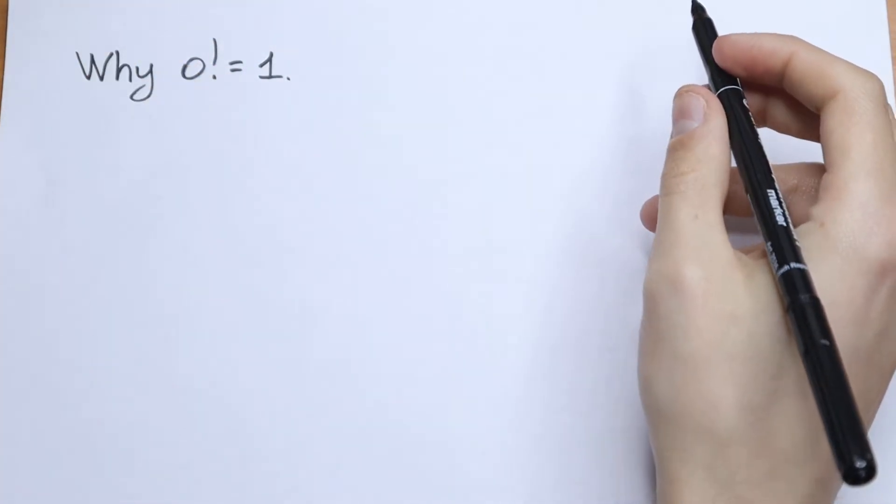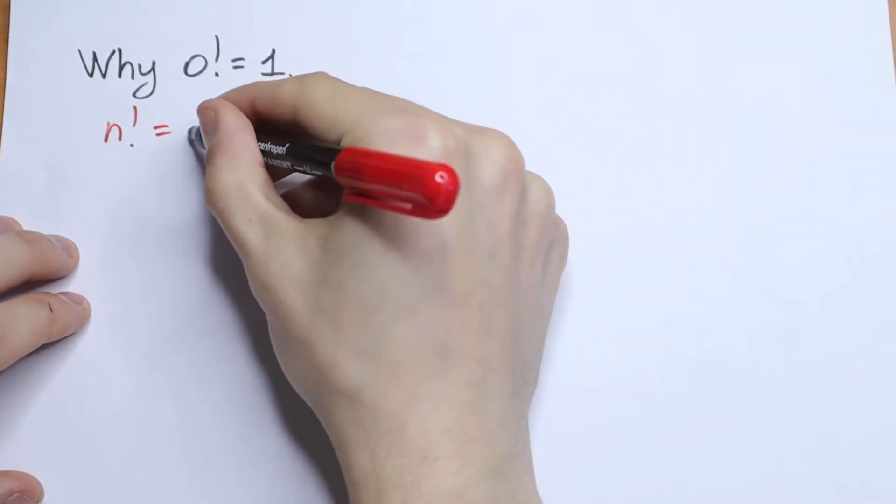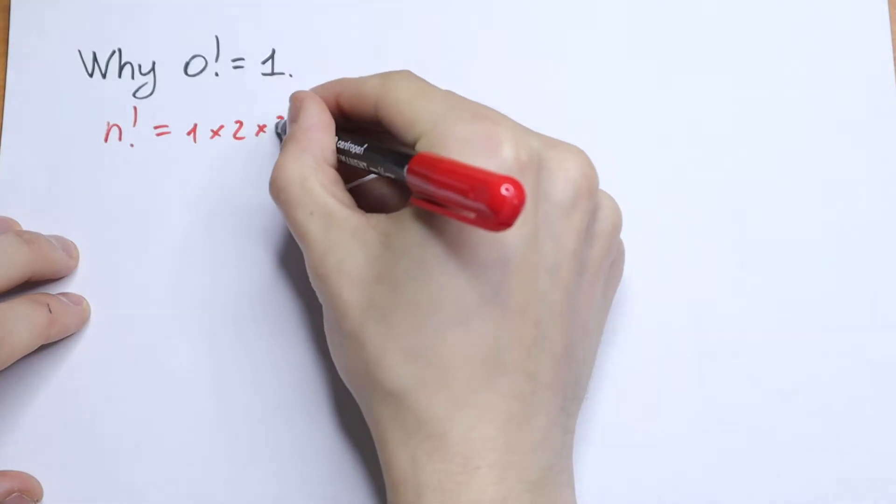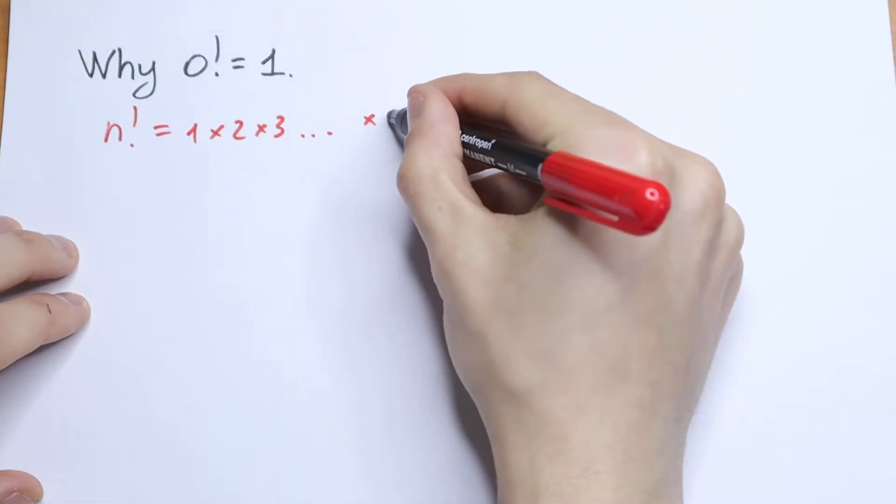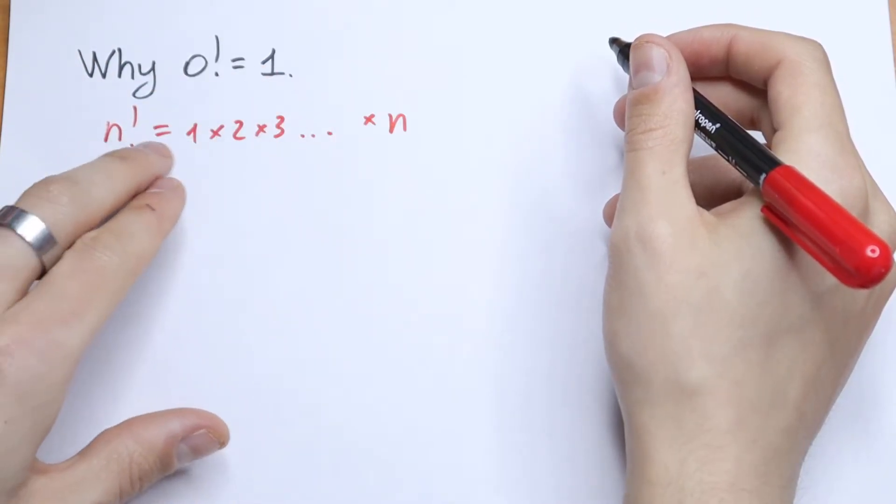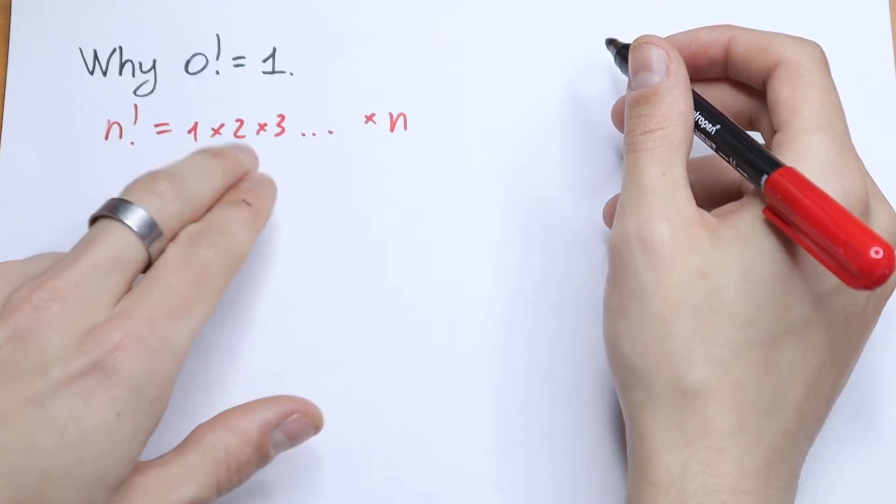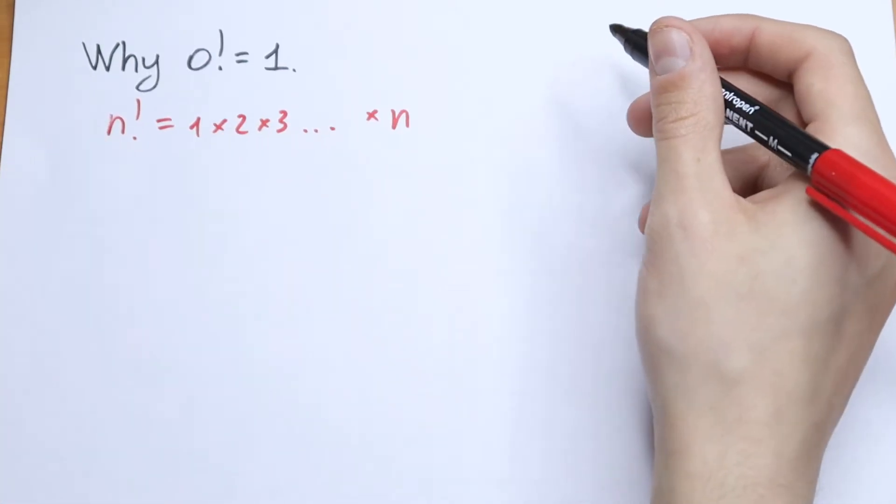So first of all we need to know about the definition of the factorial. So n! will be equal to 1 times 2 times 3 dot dot dot and times n. So this is the definition of the factorial. Of course 2! is equal to 1 times 2, 3! equal to 1 times 2 times 3 and it's a product to this number, until this number.